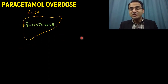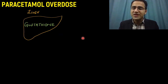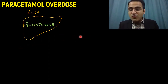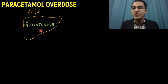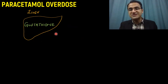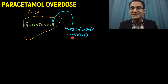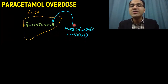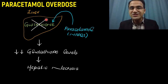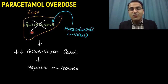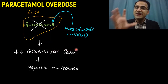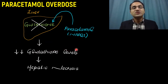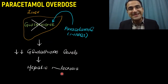Regarding the mechanism by which paracetamol overdose damages the body: paracetamol, if taken in overdose, damages the liver. In the liver, we have a compound called glutathione that has a protective effect. Paracetamol overdose produces a compound called NAPQI, which destroys the glutathione and reduces its levels. When glutathione is lost, the liver's protective effect is lost, leading to hepatic necrosis and hepatic damage.